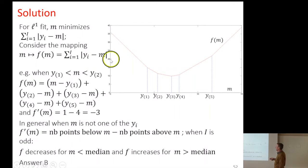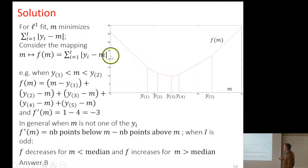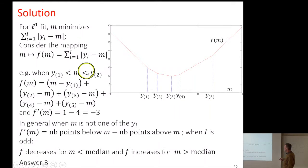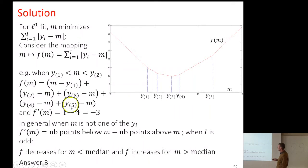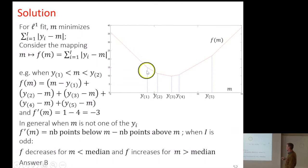The function is also continuous because absolute value is continuous — there is no gap. We can compute the derivative, or slope, which is defined everywhere except at the breakpoints. For example, between Y1 and Y2, there is one positive part giving derivative plus one, and all other points give minus one. So the derivative there will be minus three, and the derivative in general is the number of points below M minus the number above M.